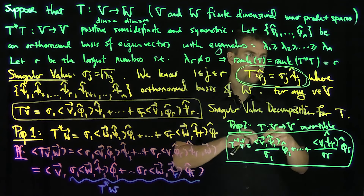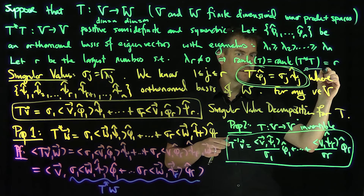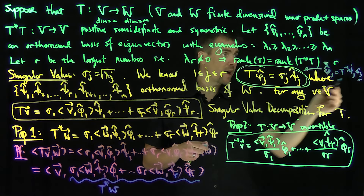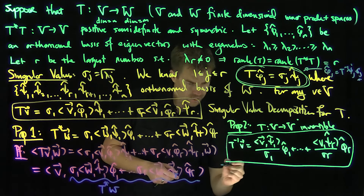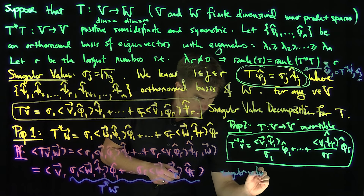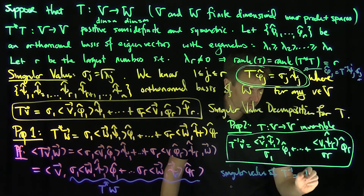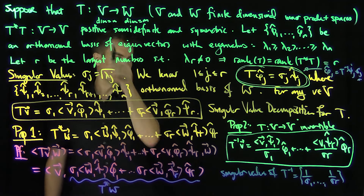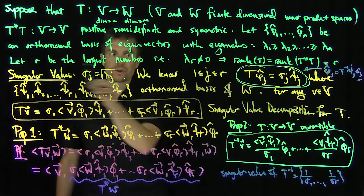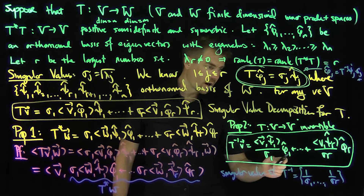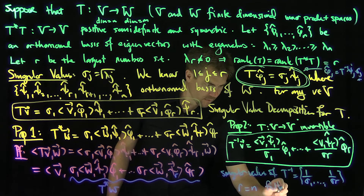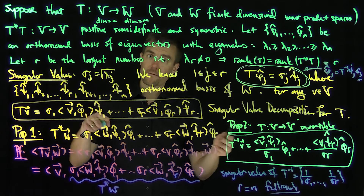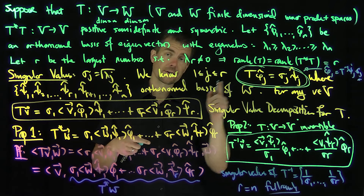This formula follows directly from the defining relationship T(phi-j-hat) = sigma-j times psi-j-hat by applying the inverse to both sides, giving phi-j-hat = T-inverse(psi-j-hat) times sigma-j. Since sigma-j is nonzero in this range, we move sigma-j to the denominator. Because T is invertible it is full rank, so r equals n here. These are two very useful singular value decompositions obtained for free by using the definitions of the adjoint and properties of the inverse. Thank you very much.